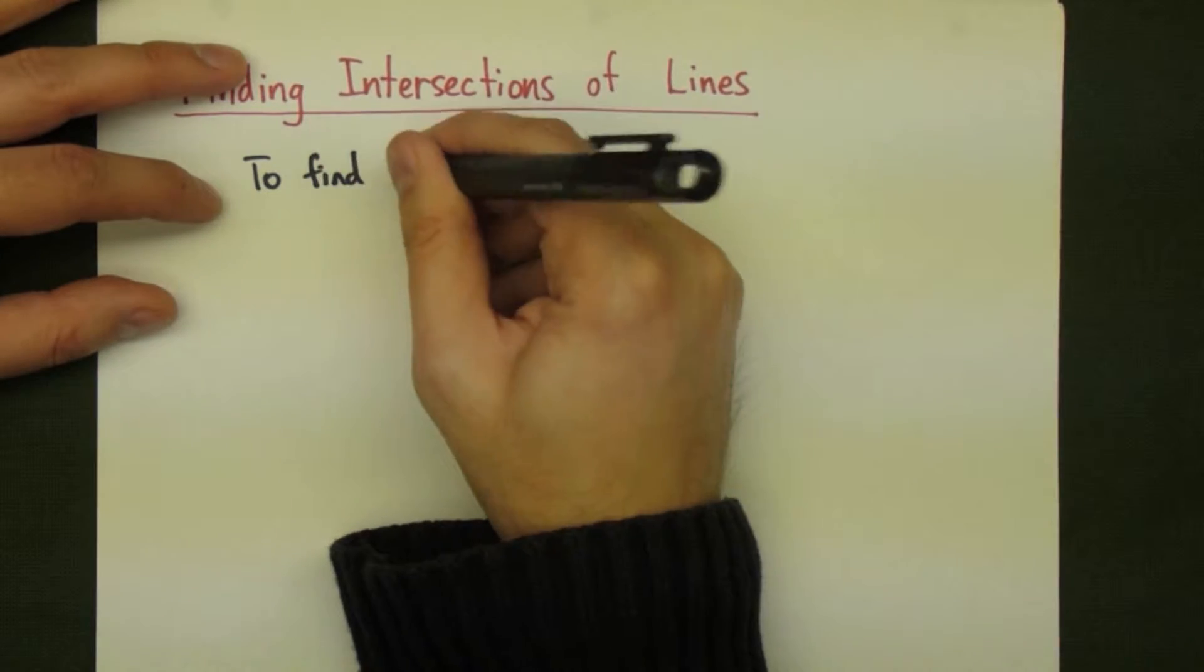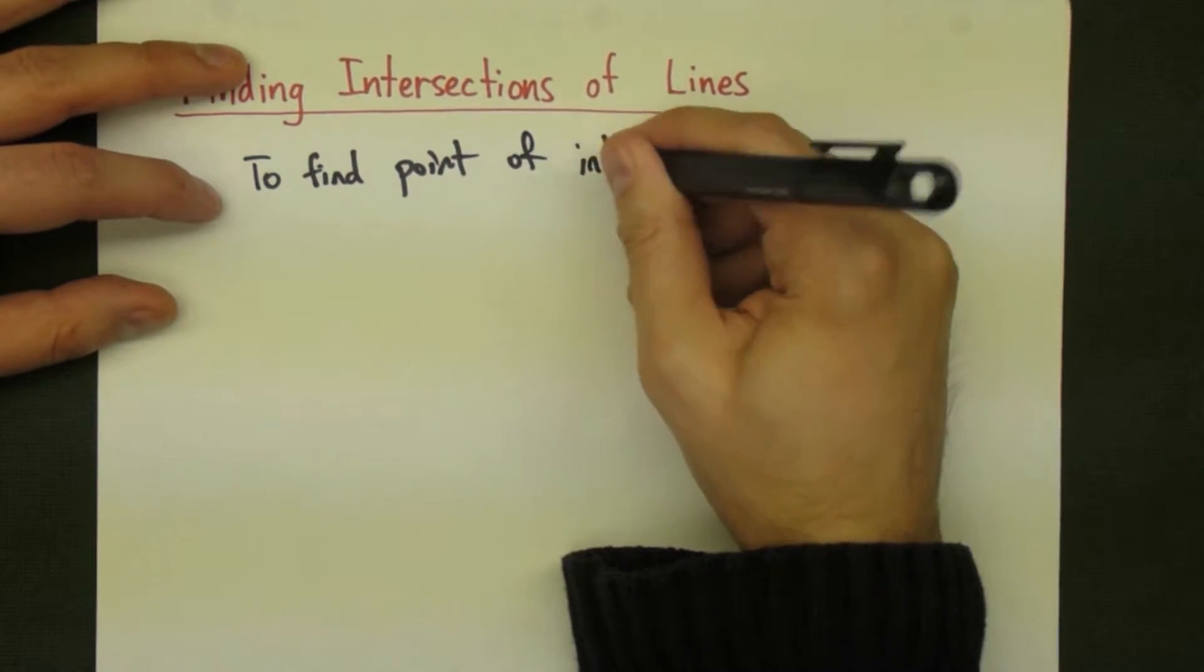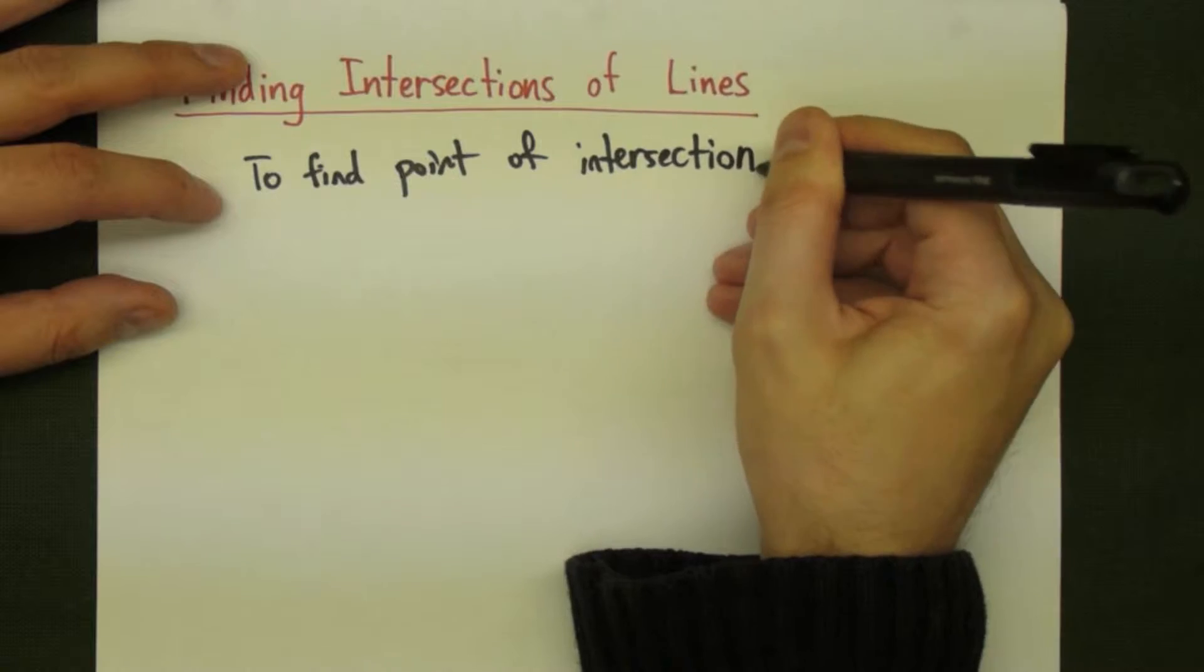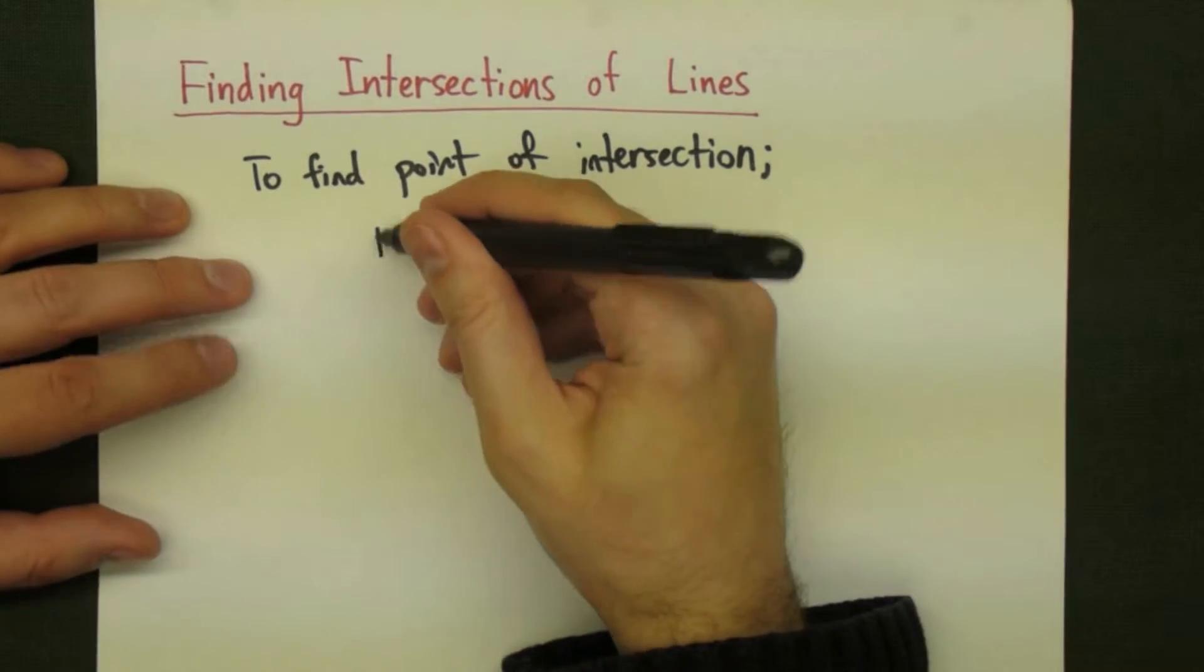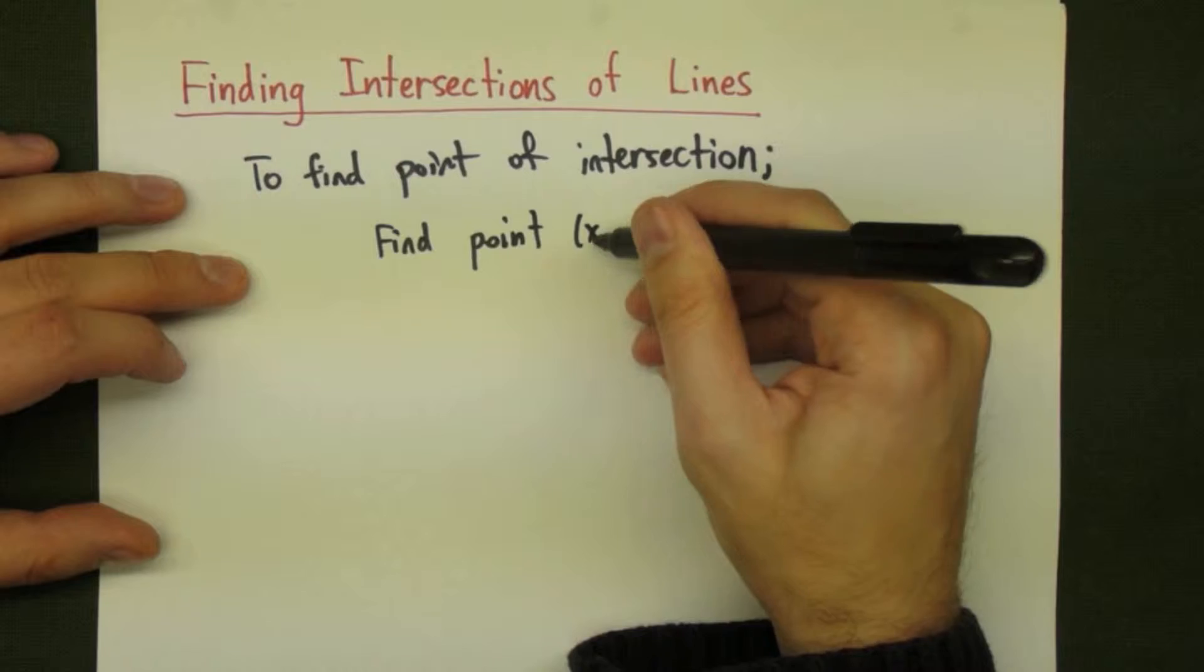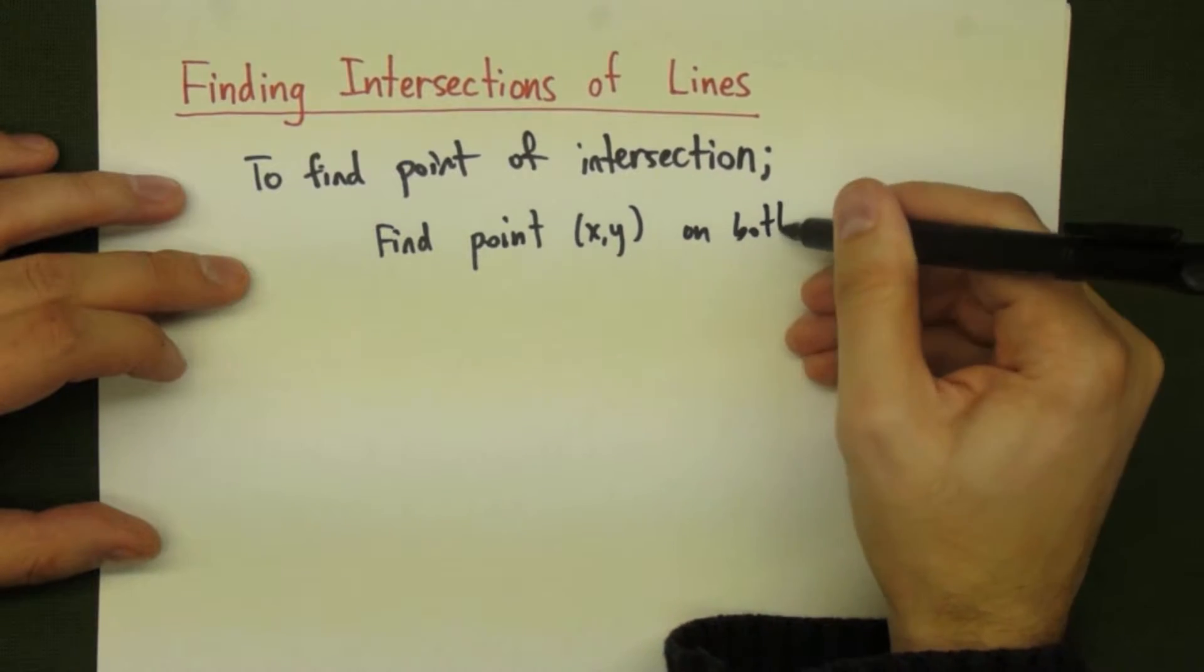In this video, we are going to briefly talk about finding the intersection point between two straight lines. To find the point of intersection, we need to find a point that lies on both of the lines.